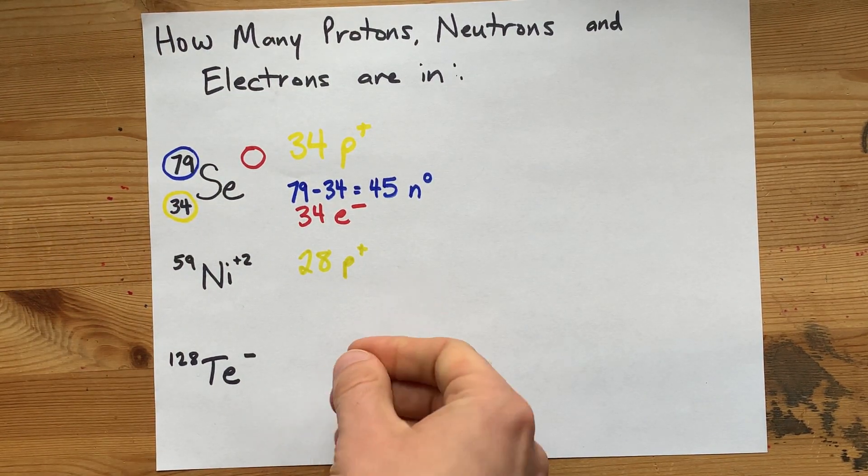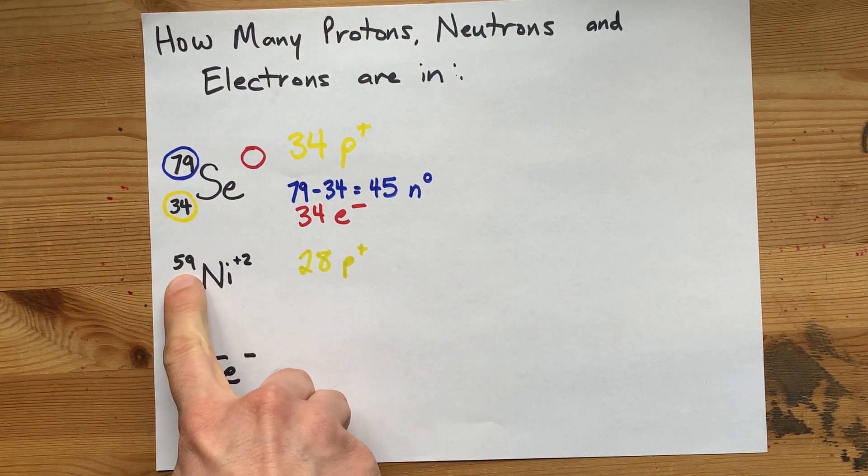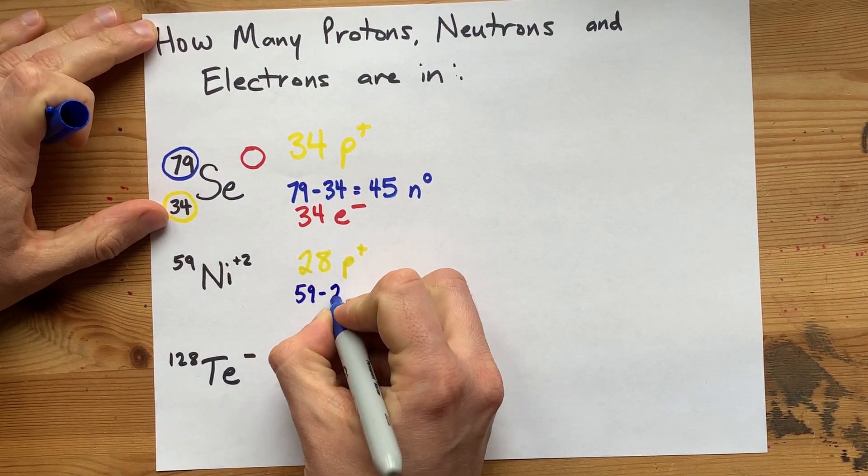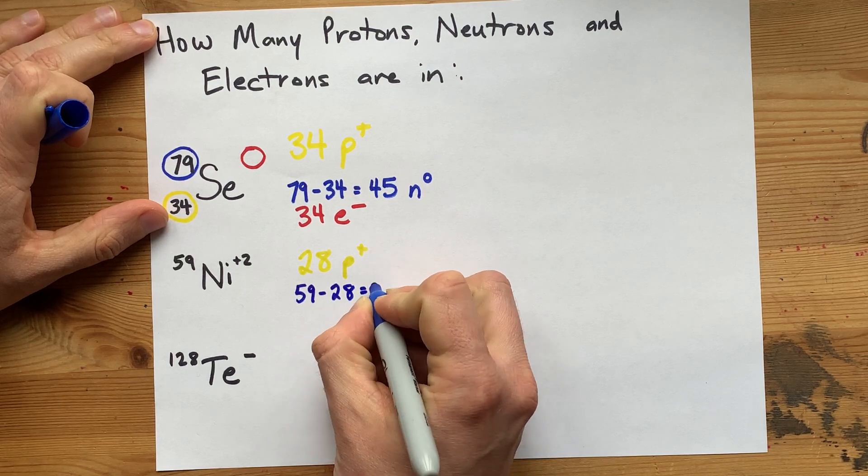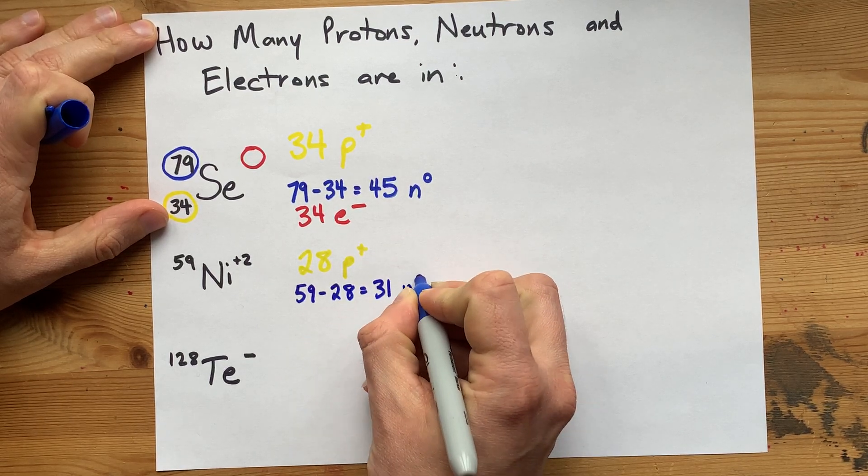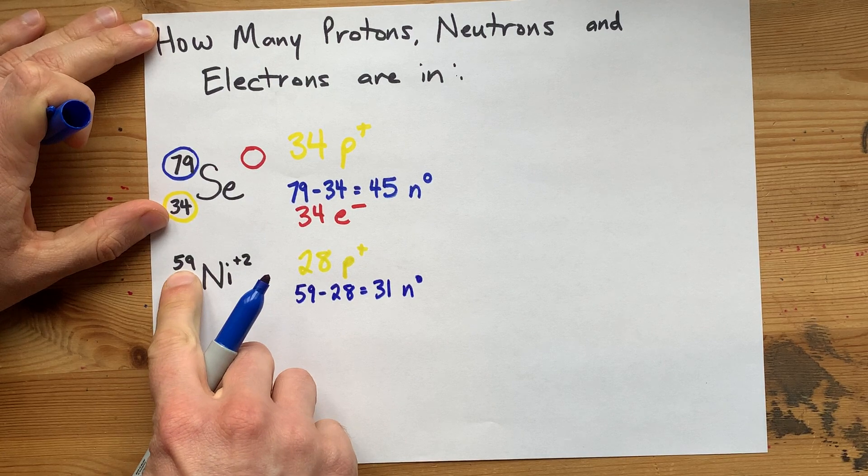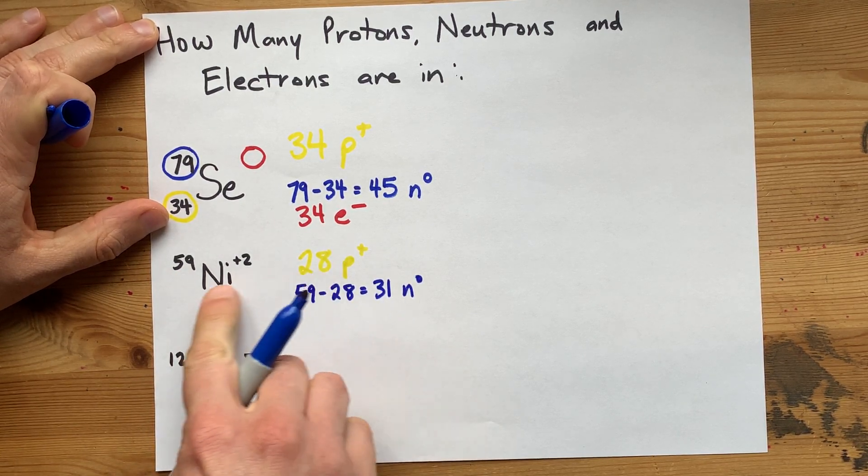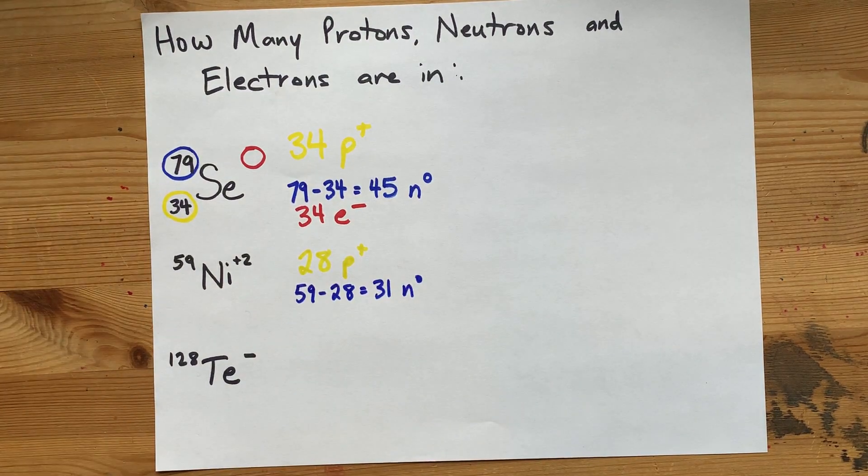The number of neutrons. Now, we are given a mass number of 59 here. So, you take away the number of protons from that number, and it'll tell you how many neutrons there are. 59 less the 28 that was our protons gives you the number of neutrons.